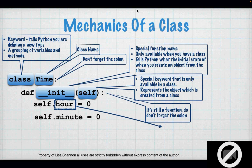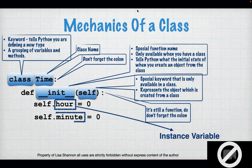Then I have two variables, and that's how these variables are defined. self.hour says this is an instance variable, so it exists inside an object. That's important so that each and every object I create has a different hour. I have the ability to assign a different hour to each object. Same with minute. So by saying self.hour equals zero and self.minute equals zero, I have created two instance variables that I can set on my objects. This is just words to Python until I create an object.